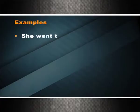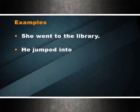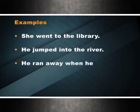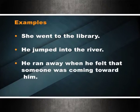Prepositions for direction — 'to,' 'toward,' 'through,' 'into' — are used to describe direction. Examples: she went to the library; he jumped into the river; he ran away when he felt that someone was coming towards him.